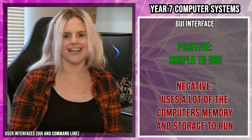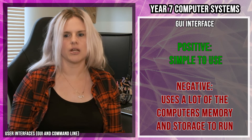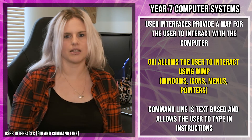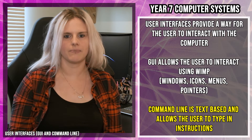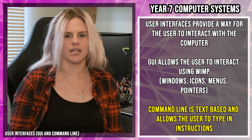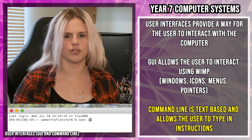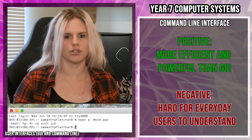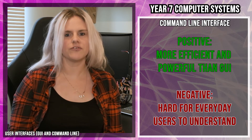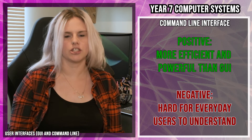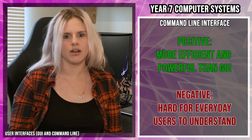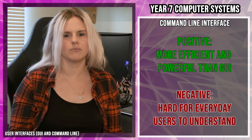The problem with GUI is that because it has so many pictures, it can take up a lot of your computer's memory and storage, meaning your computer runs a little bit slower. The second type of user interface is command line. Command line is text-based and allows the user to type in instructions. There are no pictures to help you out, and if you don't know the instructions you can't use it — you need to be a specialist. However, because there aren't any pictures, it takes up less storage and memory, meaning the computer will be more powerful and run faster.